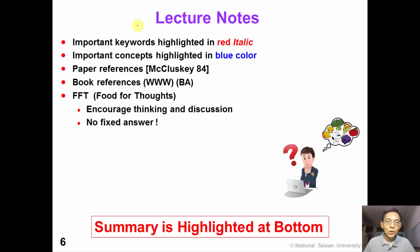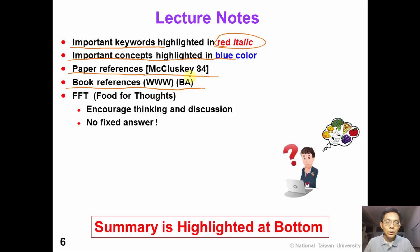In this course, we will use the following notation. For important keywords, we will highlight them in red italic. For important concepts, we will highlight them in blue color. Paper references will be quoted in square brackets, and for book references, we will quote them in round parentheses.